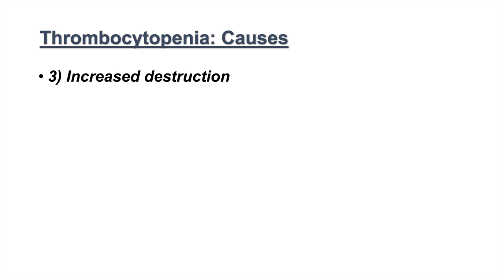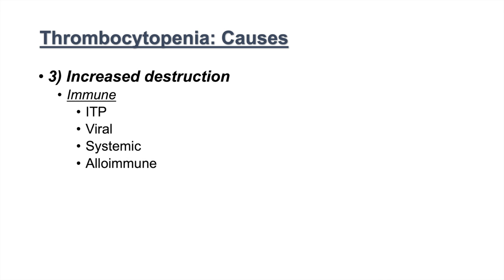The third major cause is increased destruction. Immune-mediated subcauses include ITP, viral causes, systemic causes, alloimmune reactions from blood transfusions, and HIT — heparin-induced thrombocytopenia — where antibodies are produced against heparin, leading to platelet destruction. Drug-induced immune causes of increased destruction also fall into this category.